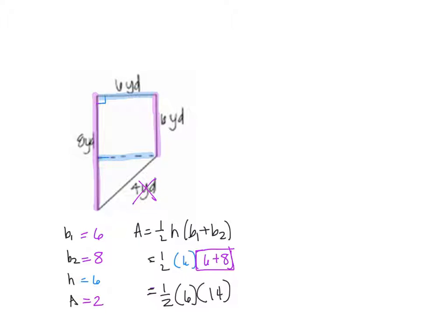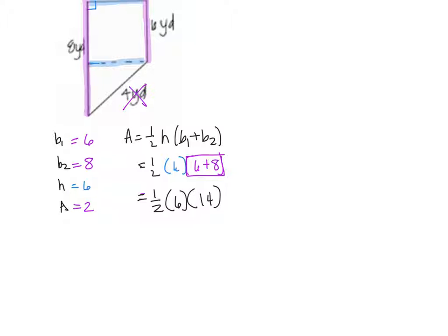Well just for grins, I'm going to do this in a different order today. I'm going to look at it, and I'm going to take one half of six. So what's one half of six, half of six is three times fourteen. And so we get three times fourteen, and when we multiply that out, we will get forty two. And that would be yards squared for the area of my trapezoid.